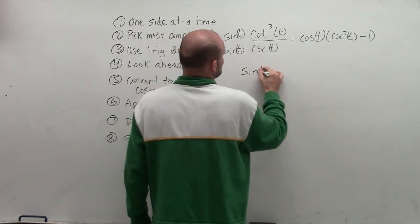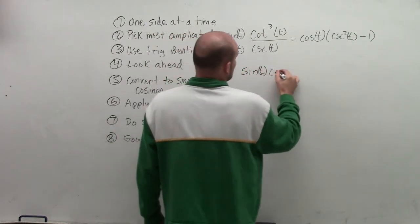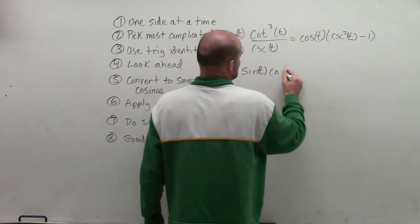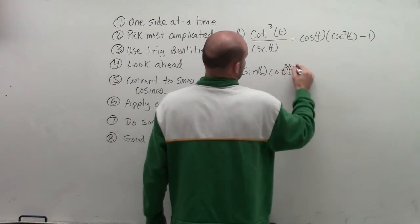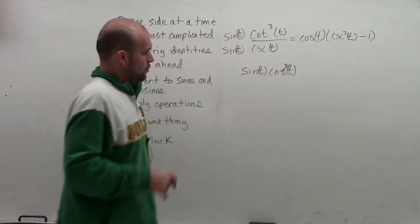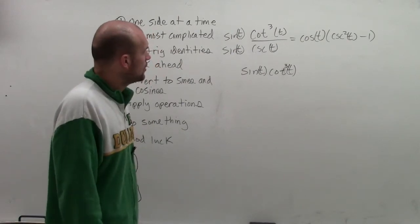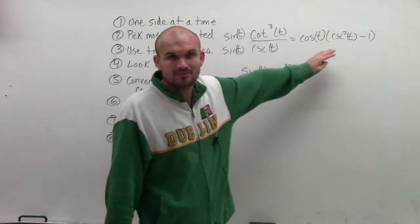So therefore, now I have sine of t times cotangent cubed of t. OK. So getting closer, but not exactly.